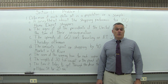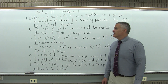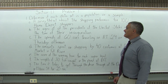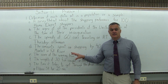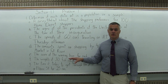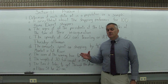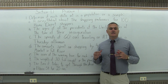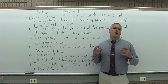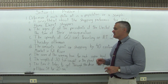This is Section 1.1, Problem 1. It says determine if each data set is a population or a sample, and there are seven different data sets that we're going to make that determination for. Population means it's the entire group that we're interested in studying; a sample means it's part of the group we're interested in studying. That's the difference.